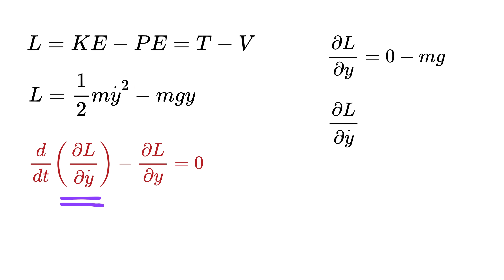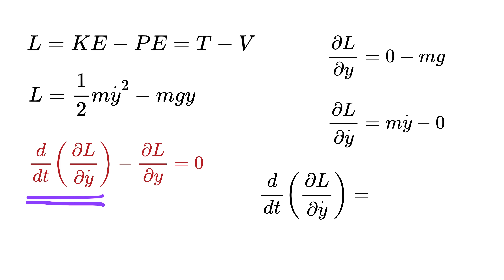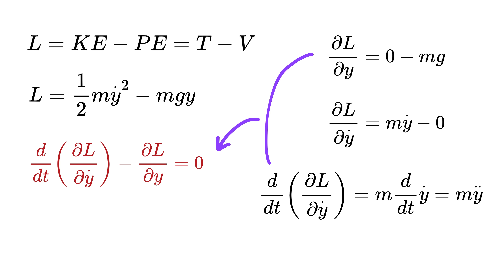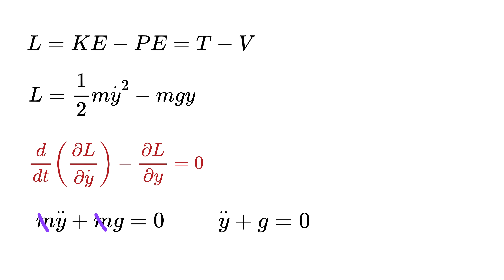When we take the partial derivative of L with respect to y-dot, only the kinetic energy term one-half m y-dot squared matters, and its derivative with respect to y-dot gives m times y-dot. The potential energy term gives zero because it has no y-dot in it. Taking the time derivative of m times y-dot gives m times y-double-dot. Plugging these into the equation gives m times y-double-dot minus of minus mg equals zero, or m y-double-dot plus mg equals zero. Dividing both sides by m gives y-double-dot plus g equals zero, or y-double-dot equals minus g.